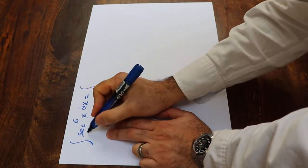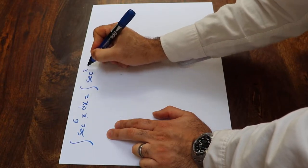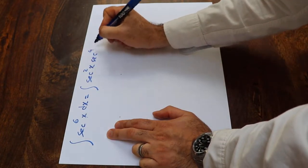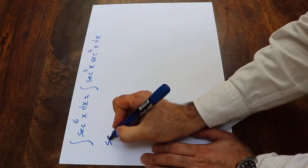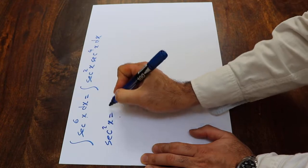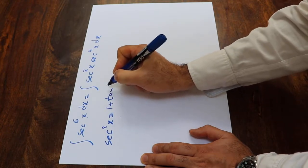To solve this integral, we can rewrite this one as sec²x sec^4x dx. From trigonometry, we know that sec²x is equal to 1 plus tan²x.